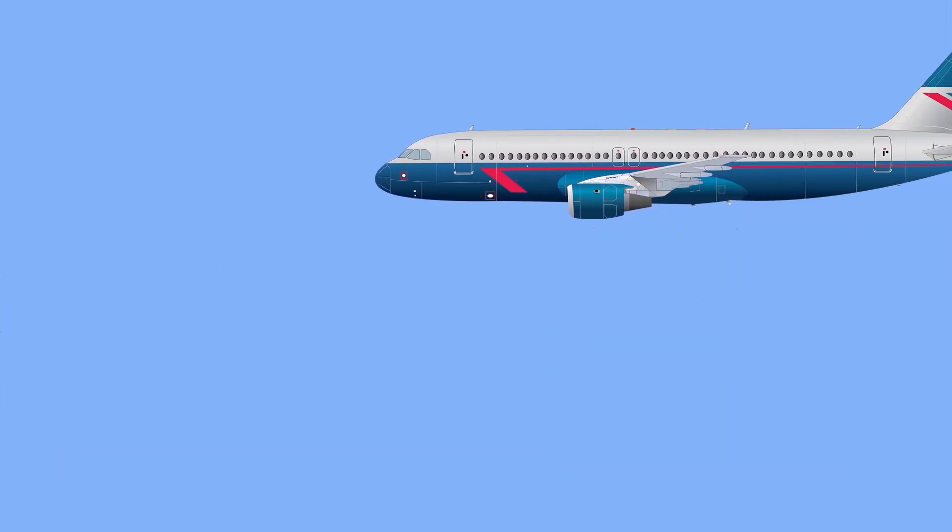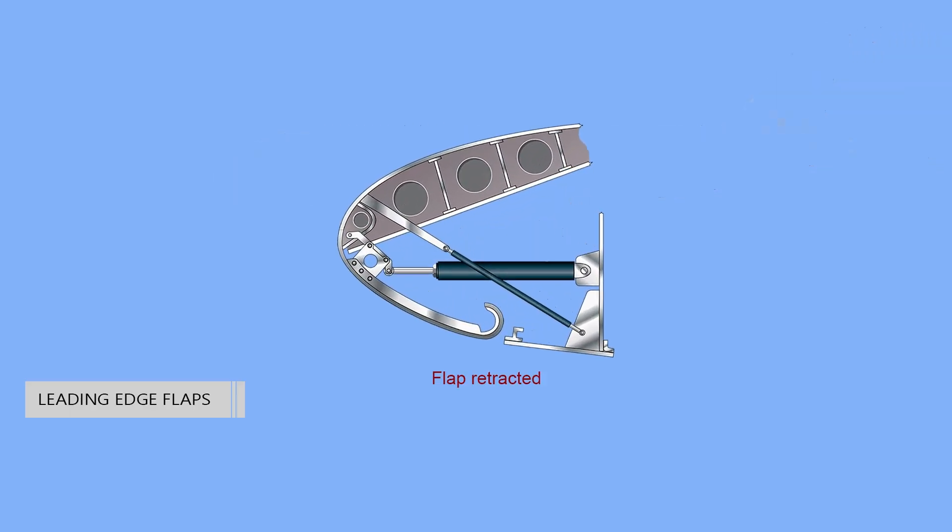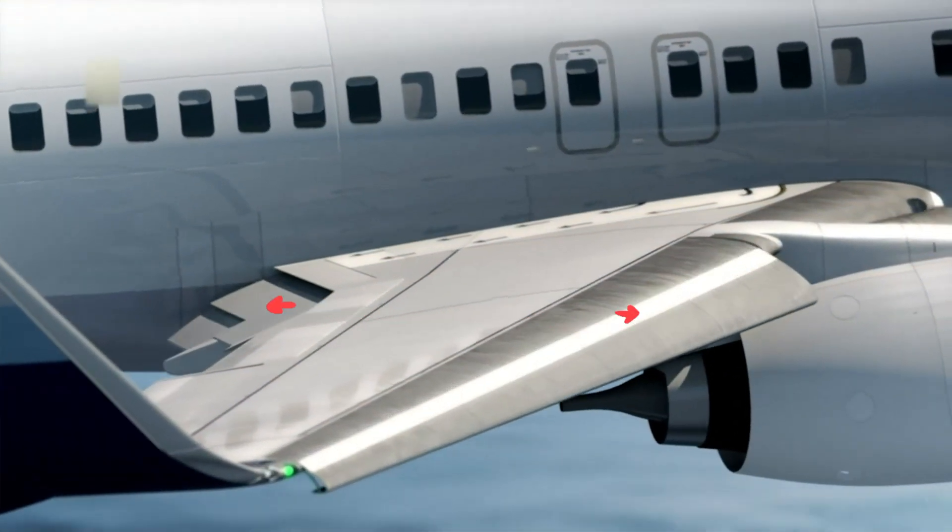Heavy aircraft often have leading edge flaps that are used in conjunction with the trailing edge flaps. While they are not installed or operate independently, their use with trailing edge flaps can greatly increase wing camber and lift. When stowed, leading edge flaps retract into the leading edge of the wing. Activation of the trailing edge flaps automatically deploys the leading edge flaps, which are driven out of the leading edge and downward, extending the camber of the wing.